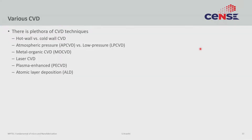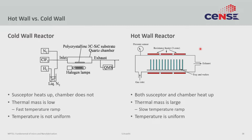The last slide of the previous lecture covered the various types of CVDs that people have designed over the years. Let us take each of these one by one. The first one is hot wall versus cold wall. The basic difference between these two types of systems is the chamber temperature. On the left, you have a substrate sitting inside a chamber with gas input and gas output.